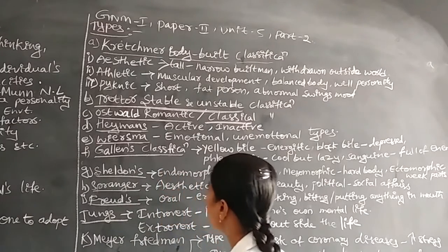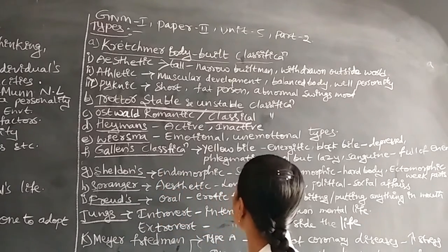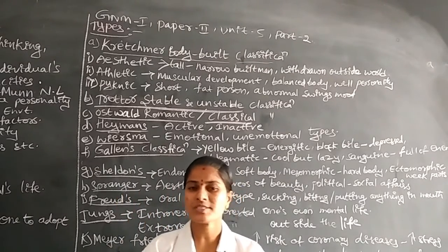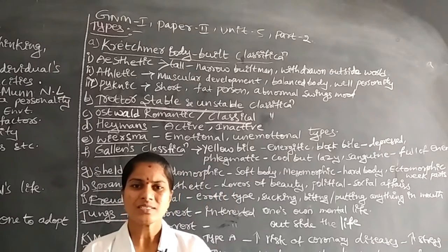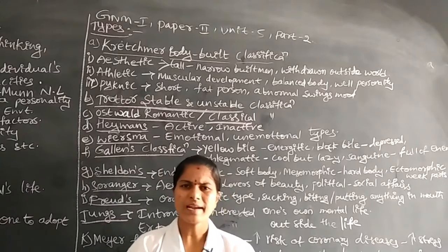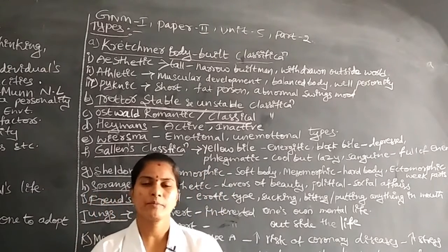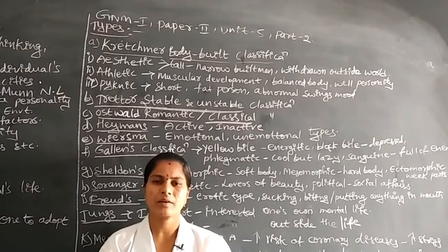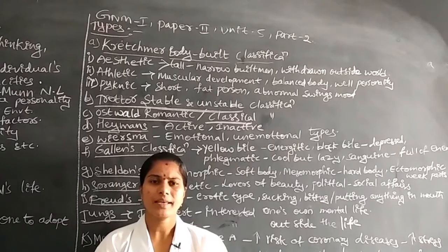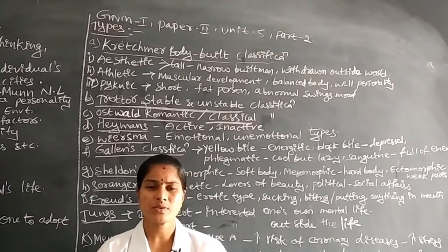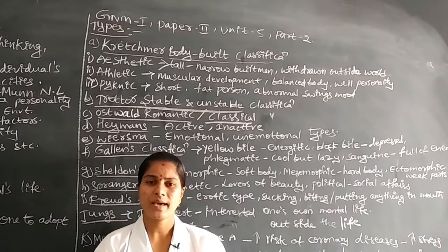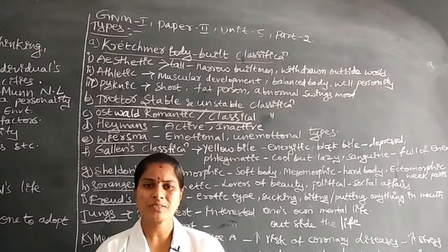Next is Wiersma's classification. In this, the psychologist mainly focuses on emotions and the lack of emotions. Sometimes persons have full emotions — in sad situations, they are overcome with emotions such as crying or going into depression. Sometimes their behavior becomes very loud or aggressive.